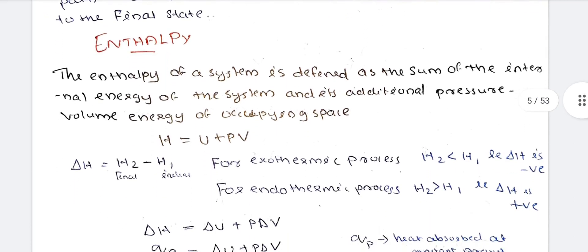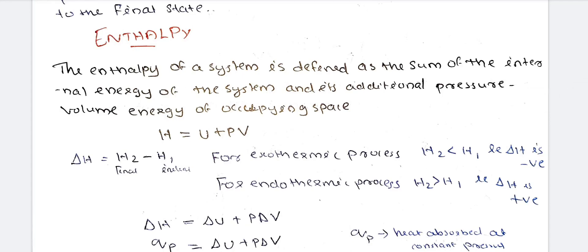Next is enthalpy. Enthalpy is the sum of the internal energy of the system and the product of its pressure and volume. The formula is H is equal to U plus PV. Therefore, delta H is equal to delta U plus P delta V. Since P delta V equals w, delta H equals delta U plus w.